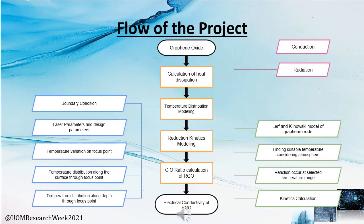As a first step, we calculated heat dissipation of graphene oxide films considering conduction and radiation. Then we modeled temperature distribution by considering boundary conditions, laser parameters, and design parameters. We modeled temperature variation at the focus point, temperature distribution along the surface through the focus point, and temperature distribution along the depth through the focus point. With the results of temperature distribution modeling, we modeled reduction kinetics using the Lerf-Klinowski model of graphene oxide, finding a suitable temperature range. With kinetic calculations, we calculated the carbon to oxygen ratio to find the electrical conductivity of reduced graphene oxide.